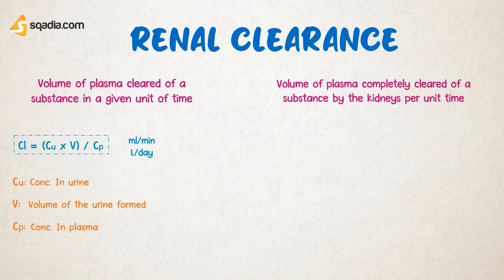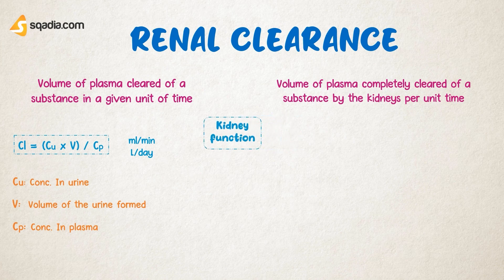The important significance of renal clearance is that it tells us how the kidneys are functioning. Different substances can be used for assessing kidney function, where the clearance values are determined for those substances and these values then help in assessing kidney function.